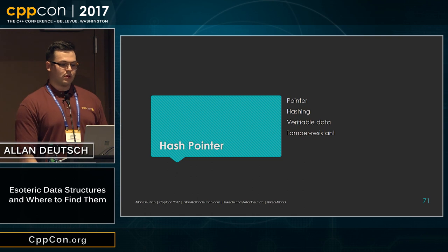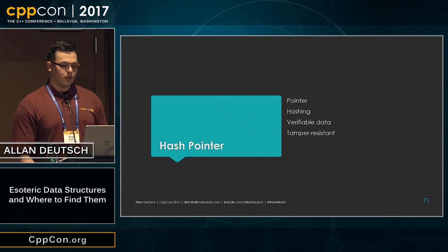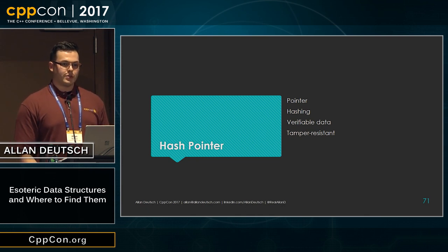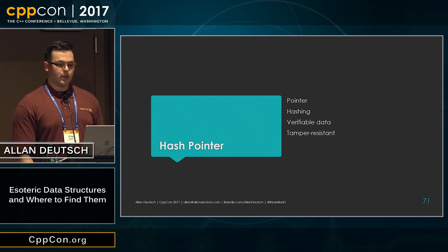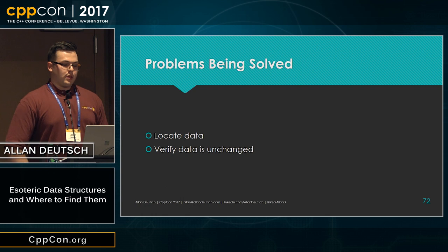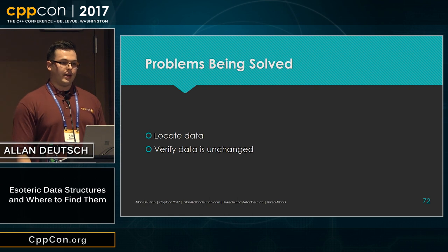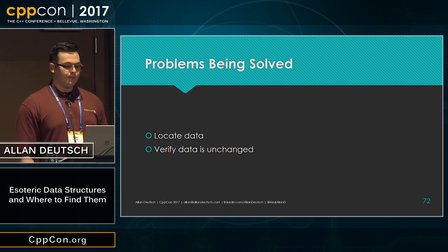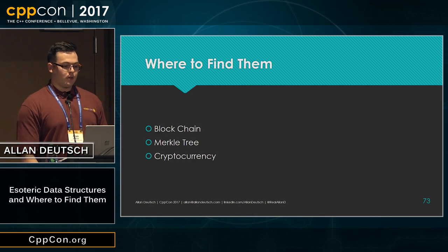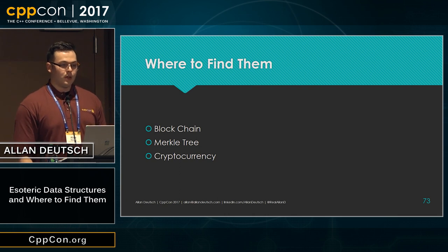I'd also like to talk about hash pointers — these are another really cool data structure. From the name you might have guessed, it's a pointer. But what it also does is store a hash of what it's pointing at. Because of this, you're able to verify the data is in the same state it was in when you first got your pointer to it, and it's pretty tamper-resistant. The problem being solved is that you need to locate your data and want to verify it hasn't been changed since you got your pointer to it. It's found mainly in blockchain and Merkle trees, which are the two data structures derived from it, and both are common in cryptocurrency.